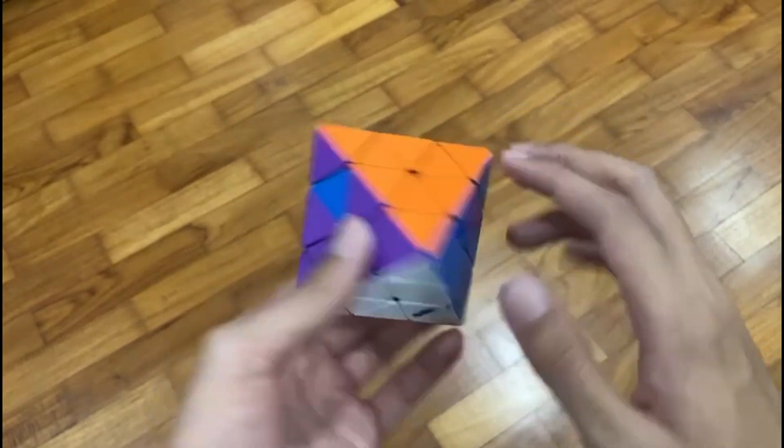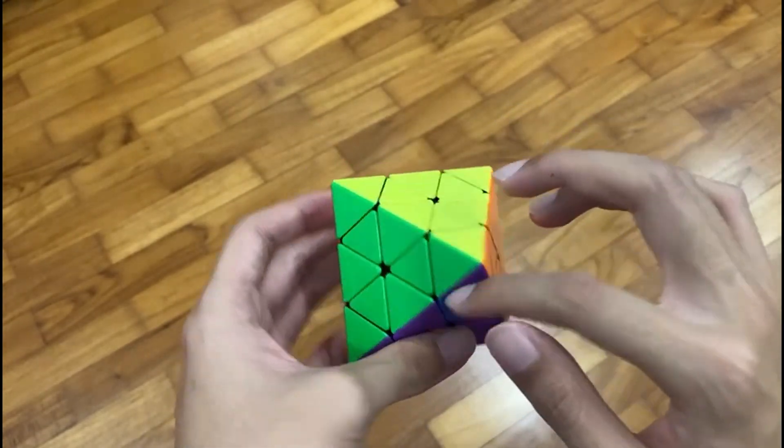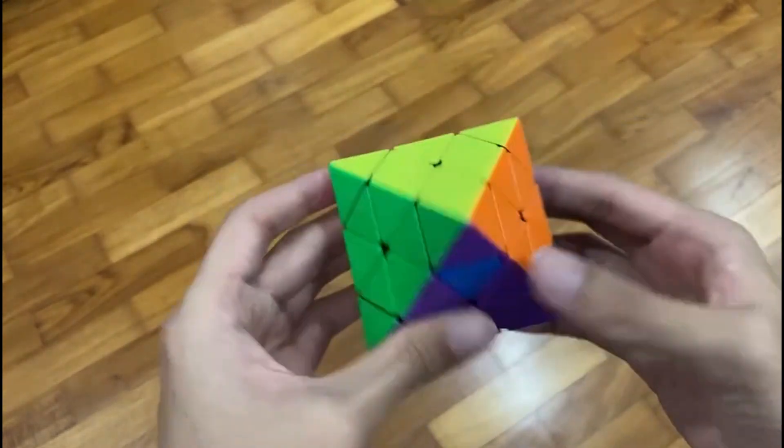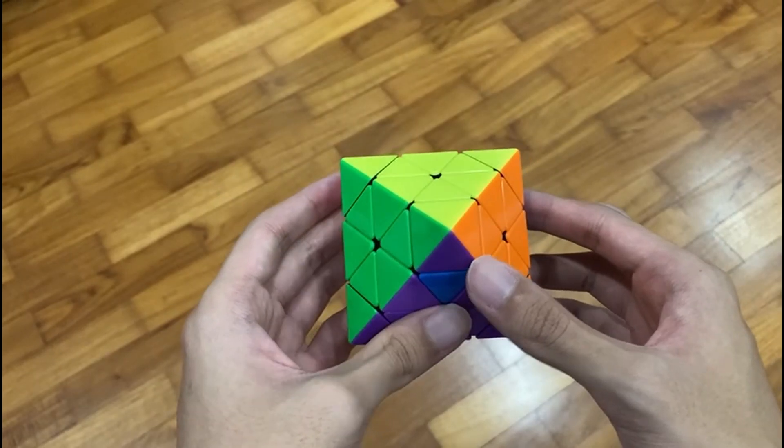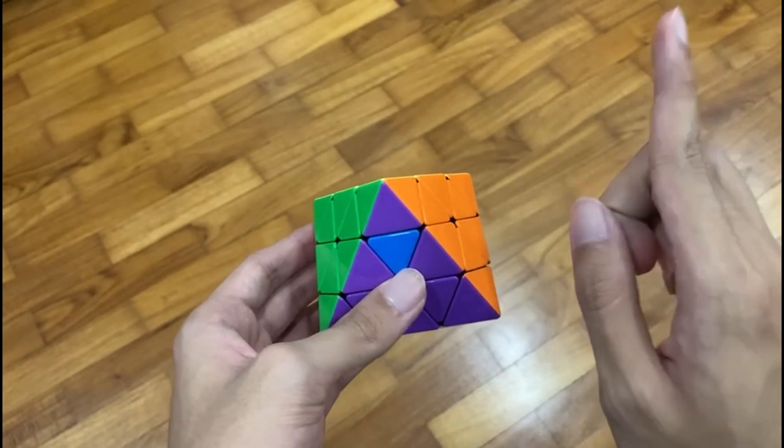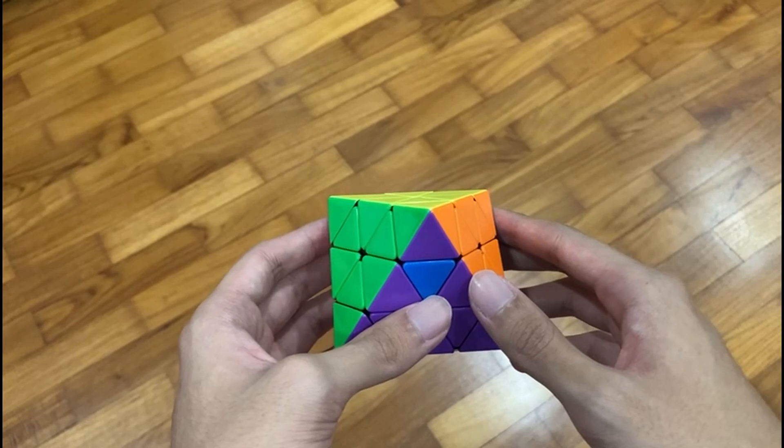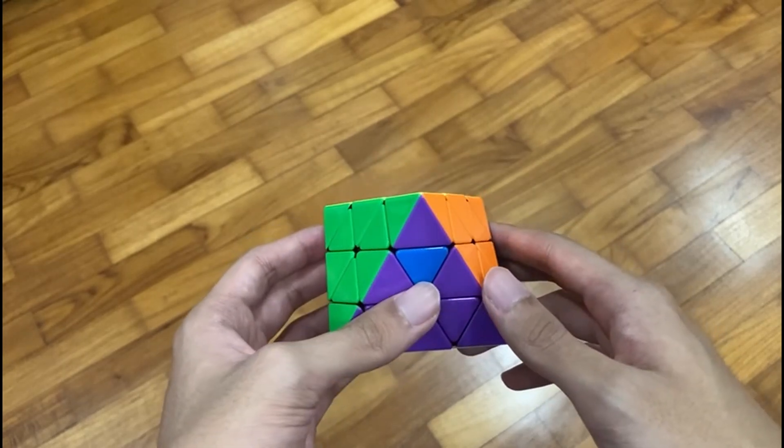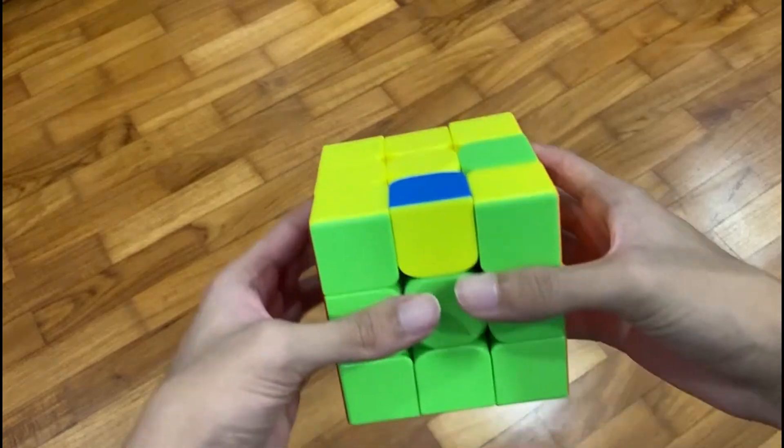One of them is this two swap over here. The second one is when you get a U-perm between these three centers. And the other one is the U-perm in the other direction. And all it takes is actually just one algorithm to solve all three of these cases. And this one algorithm is very similar to one on a 3x3.